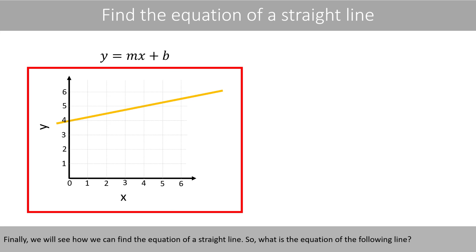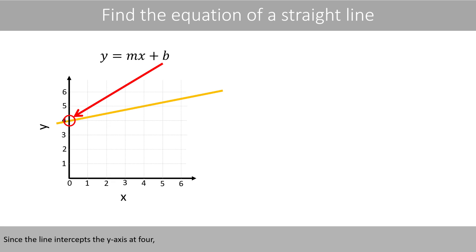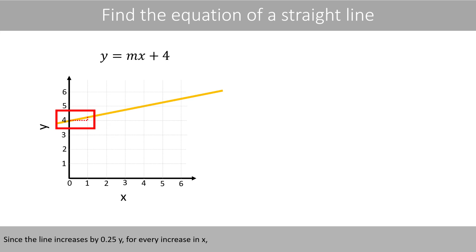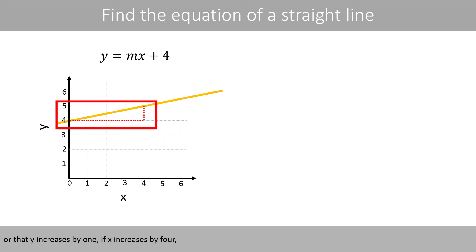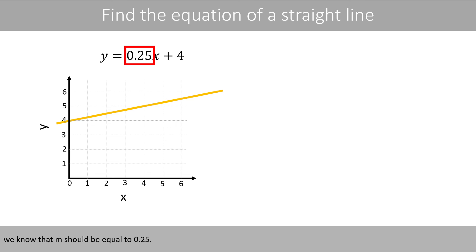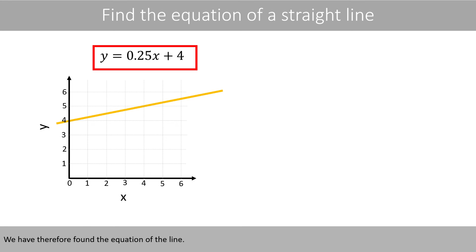Finally, we'll see how we can find the equation of a straight line. So what is the equation of the following line? Since the line intercepts the Y axis at 4, we know that B should be equal to 4. Since the line increases by 0.25Y for every increase in X, or that Y increases by 1 if X is increased by 4, we know that M should be equal to 0.25. We have therefore found the equation of the line.